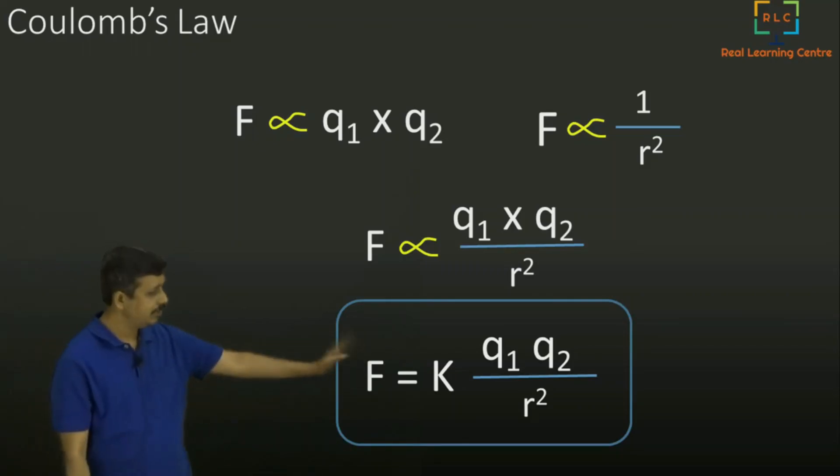Here only masses are replaced by charges, and the constant is replaced by some other constant k. This is Coulomb's law. Now we are going to use this Coulomb's law later when we go deeper into electricity. We will see some of that.